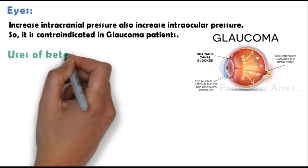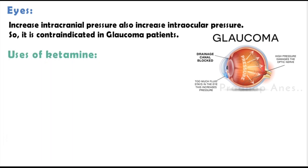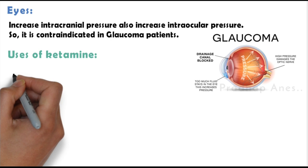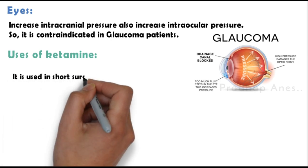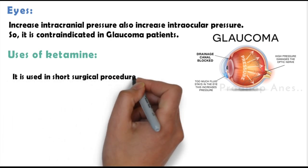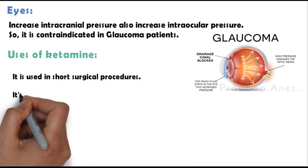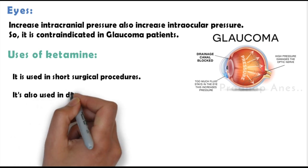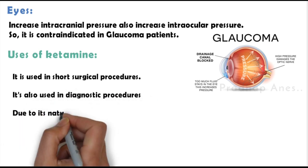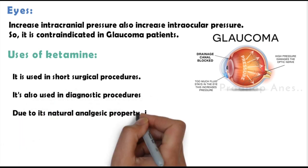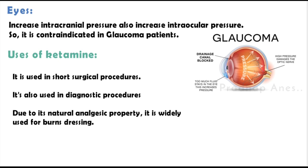Uses of ketamine: It is used in short surgical procedures such as wound debridement, incision, and drainage. It is also used in diagnostic procedures such as bronchoscopy. Due to its natural analgesic property, it is widely used for burns dressing.